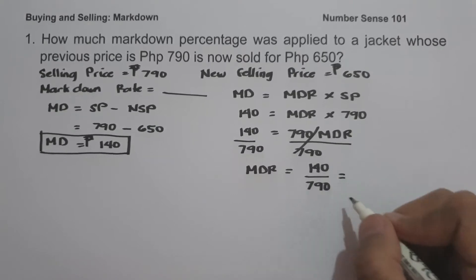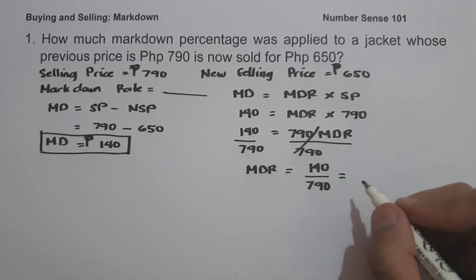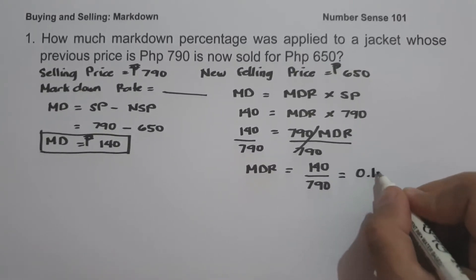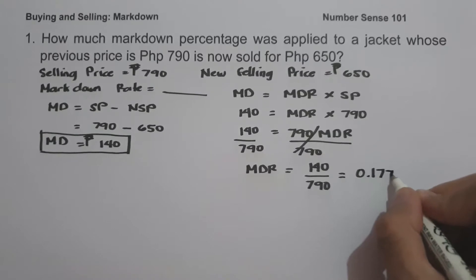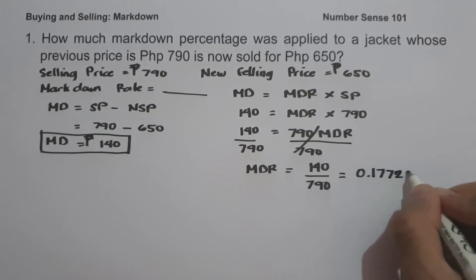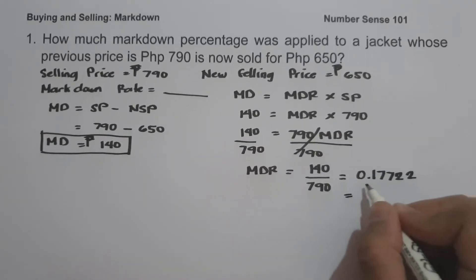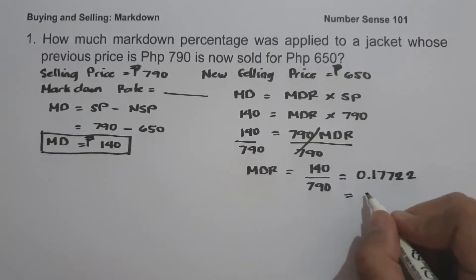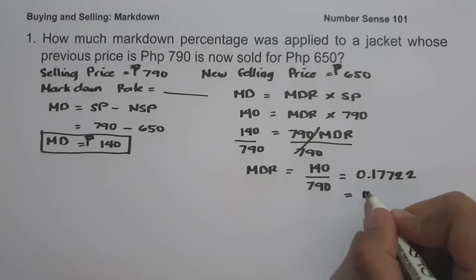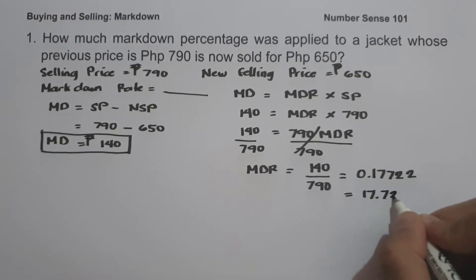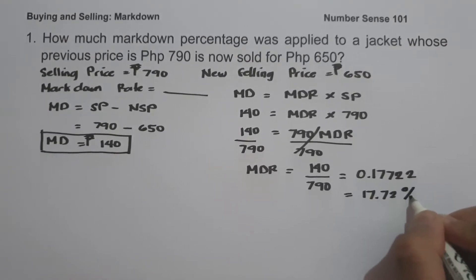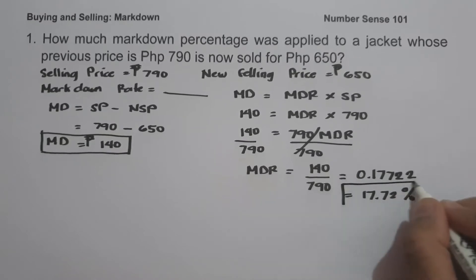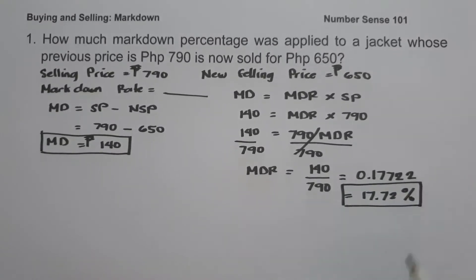If you divide 140 by 790, we get 0.17722. Simplified, this gives us 17.72%, and this will be the markdown rate.